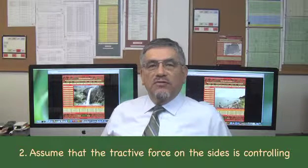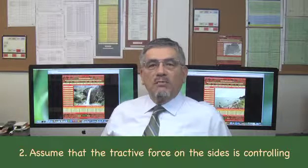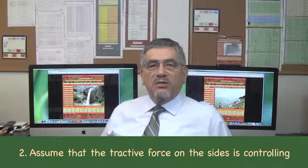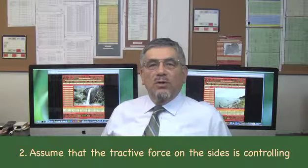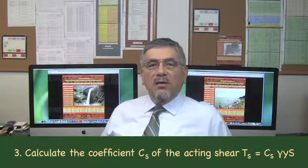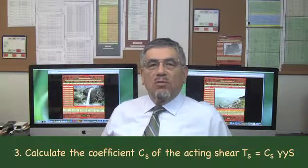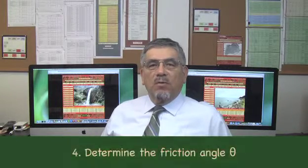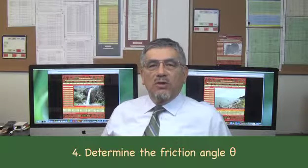When the material on the sides and bottom are different, the tractive force on the sides may not always be controlling the design. When the material on the sides is stronger than the material on the bottom, the tractive force on the bottom may be controlling the design. Step 3: Calculate the coefficient C sub S of the acting shear T sub S equal C sub S gamma YS. Step 4: Determine the friction angle, theta, based on particle size or voids ratio.